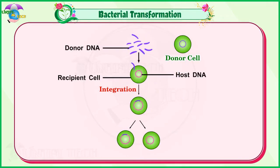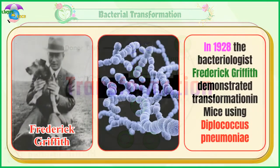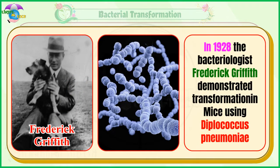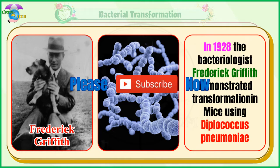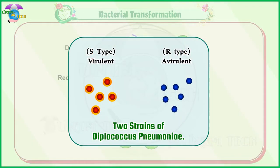Two: Transformation. Transfer of DNA from one bacterium to another is called transformation. In 1928, the bacteriologist Frederick Griffith demonstrated transformation in mice using Diplococcus pneumoniae.